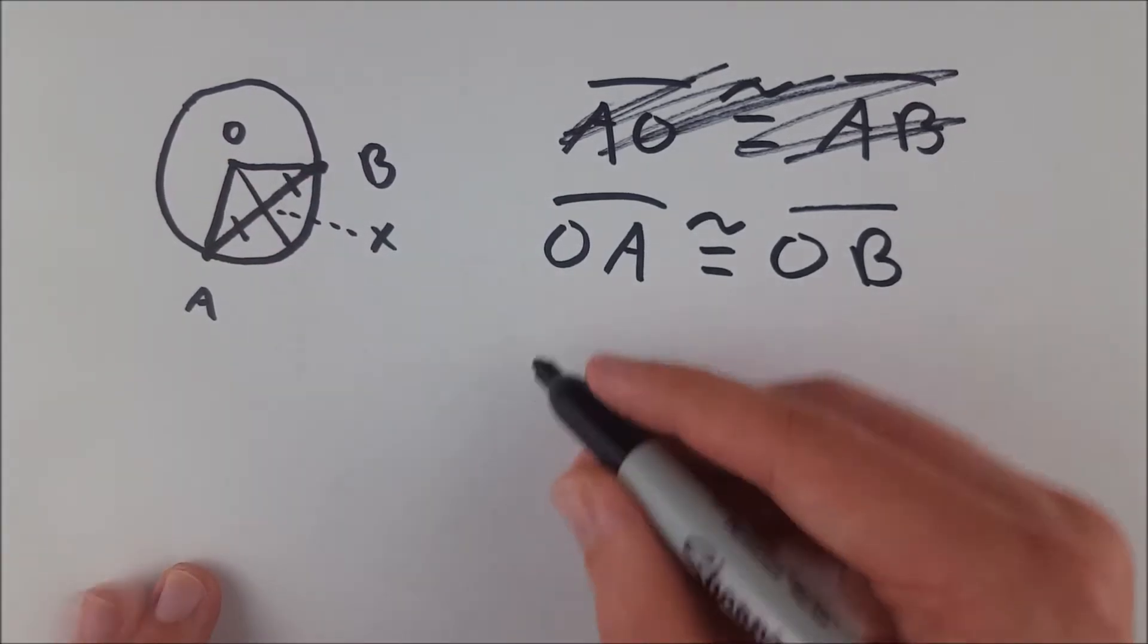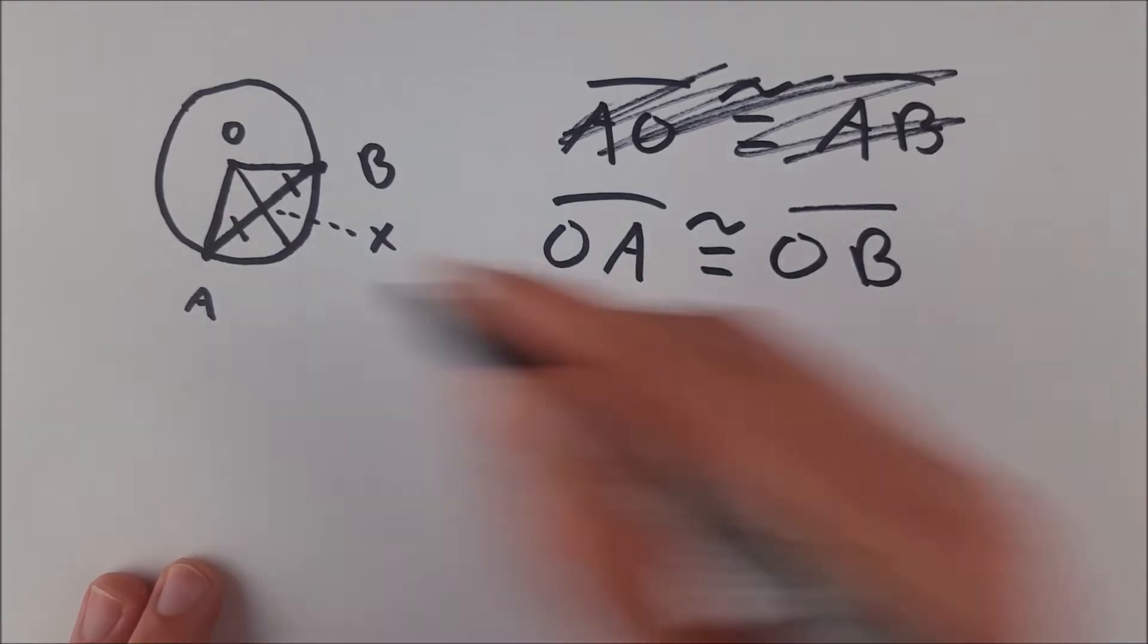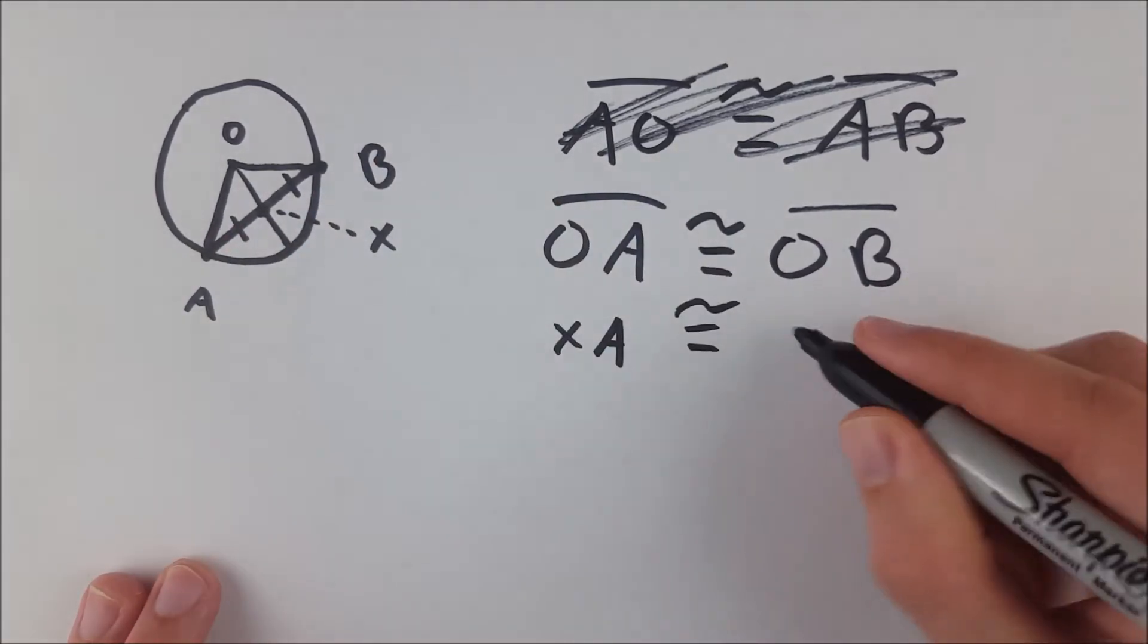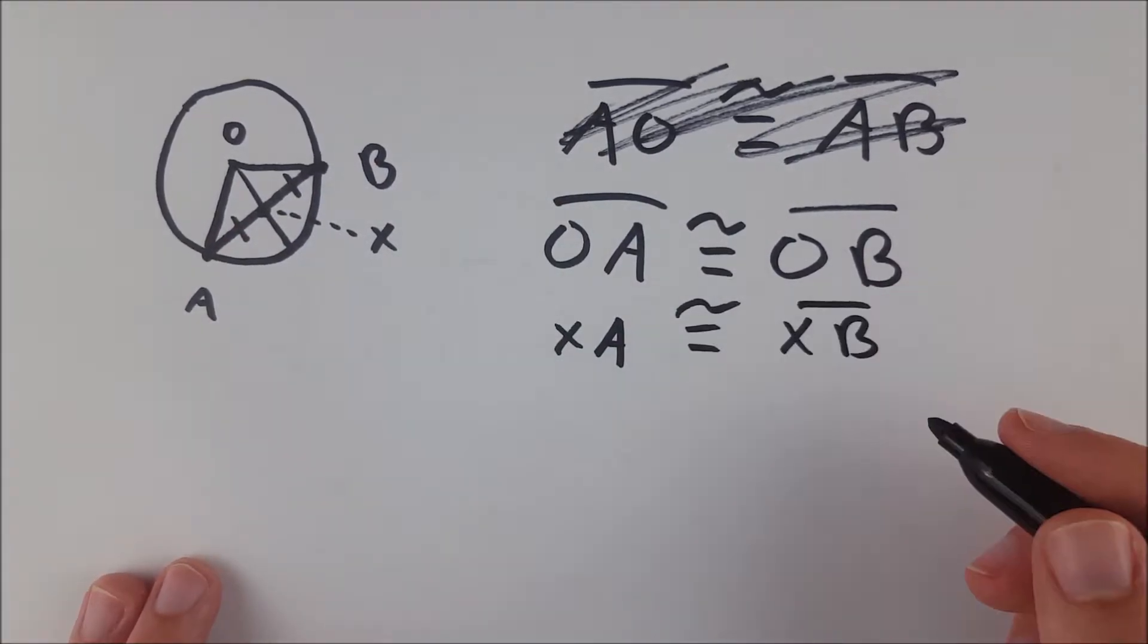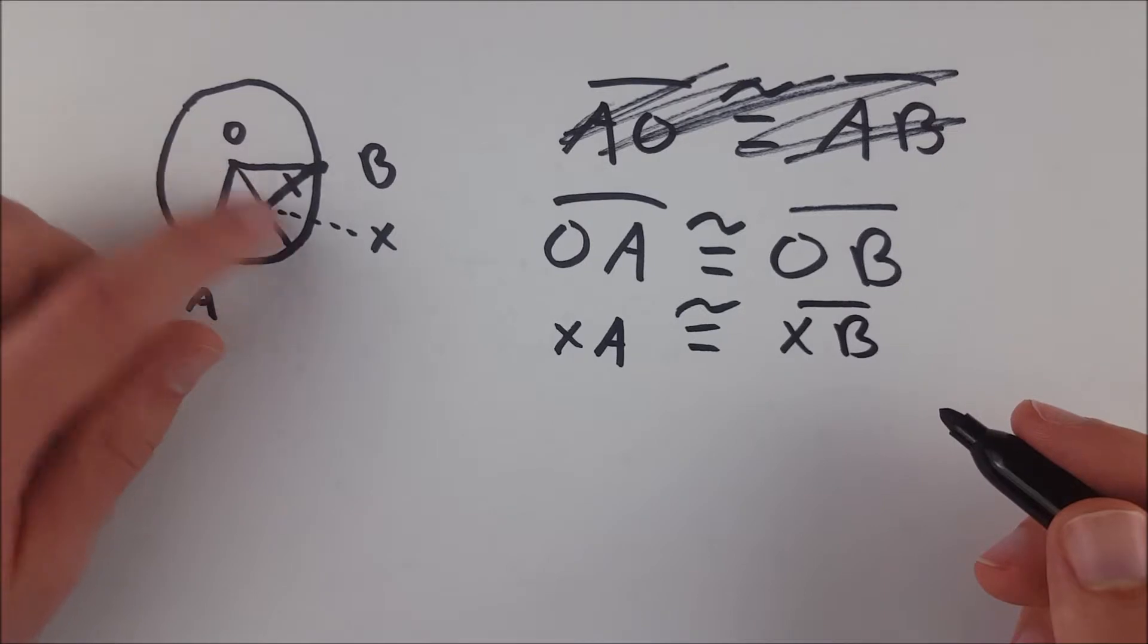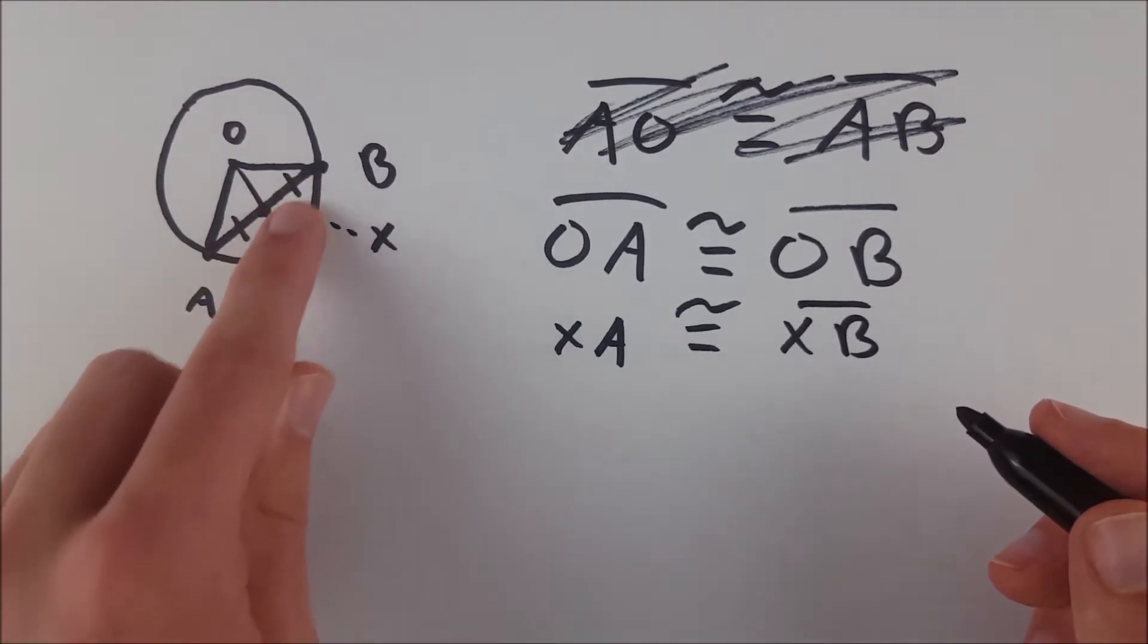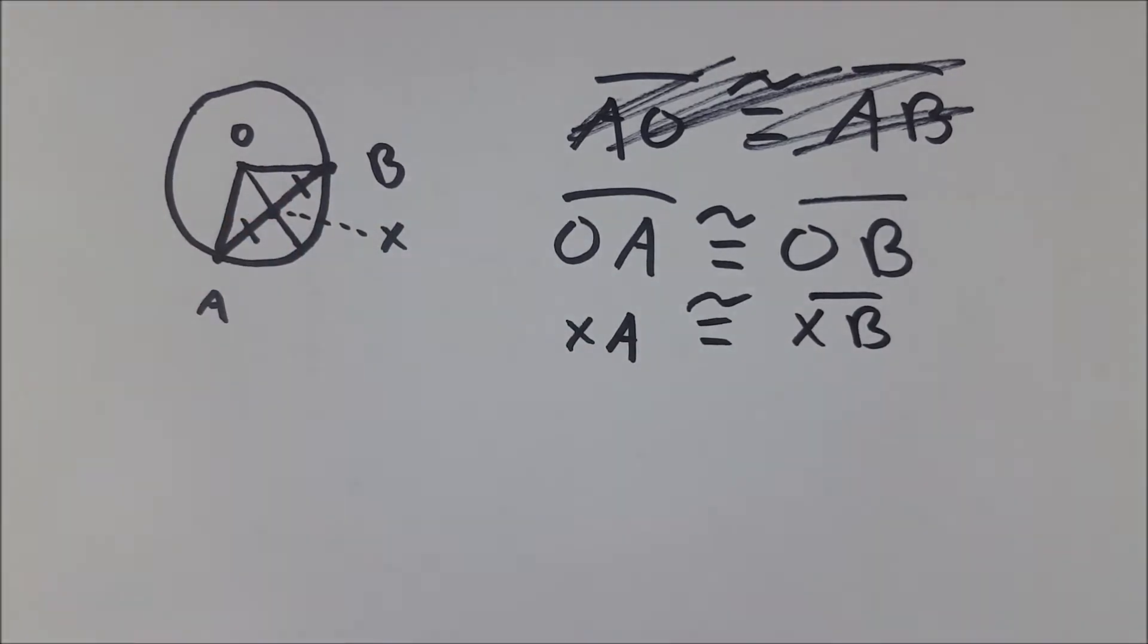And also we know that XA, where X is this point here, XA is congruent to XB, because we assumed that this radius bisects the chord. So we were given that this is congruent to this, XA congruent to XB.